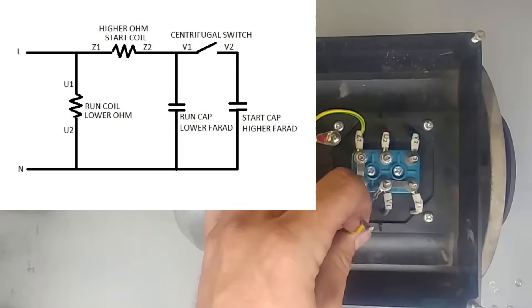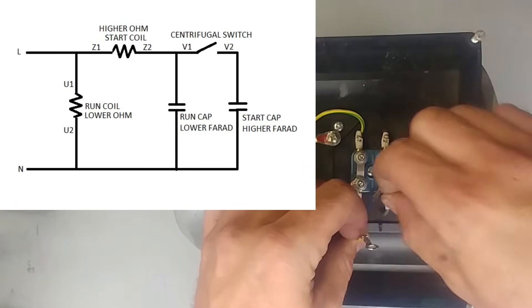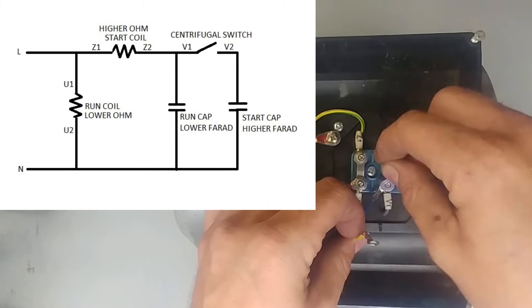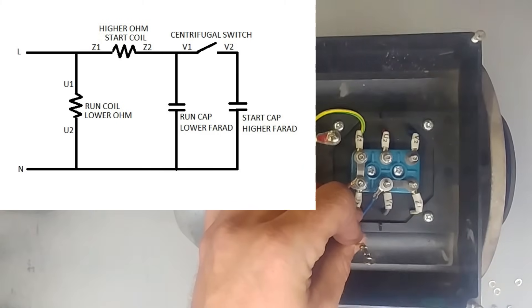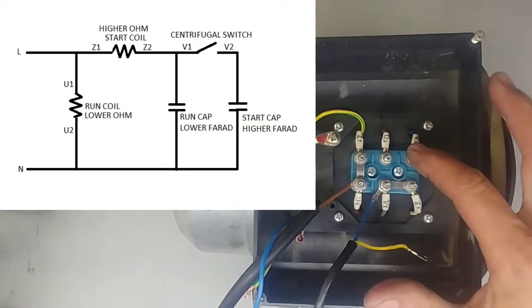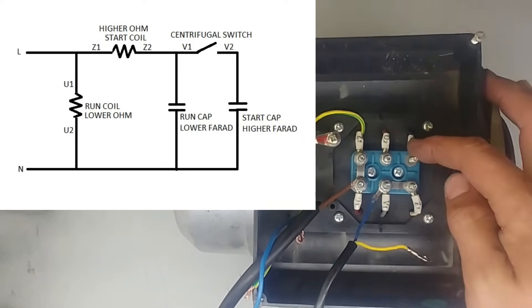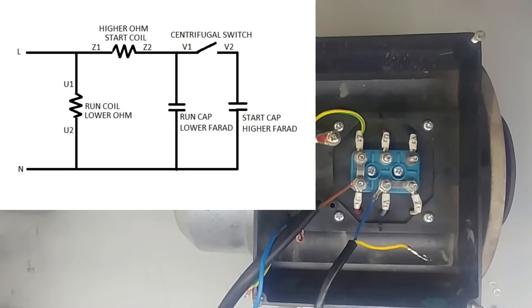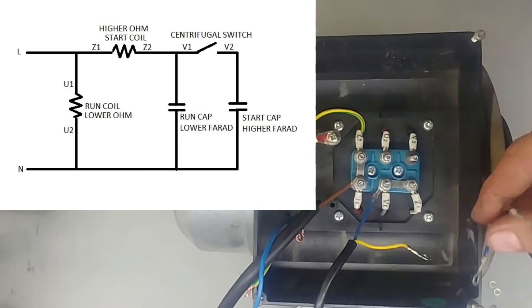Again, it doesn't matter which way around this is. You can just connect them either way. Then the other point on my centrifugal switch which is the V is connected to the start coil. That's the only point that goes to that one. Again, it doesn't matter which one.